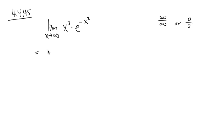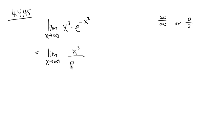Then we are going to end up with the limit when x is approaching to infinity. On the top we have x to the third power, over — bringing it down to the denominator — e to the positive x squared.